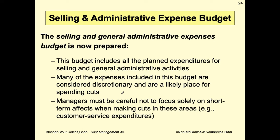The selling and general administrative expenses budget is then prepared. It includes all planned expenditures for selling and general administrative activities. Many of the expenses in this budget are considered discretionary and are likely targets for spending cuts. Managers must be careful not to focus solely on short-term effects when making cuts in this area — for example, customer service expenditures.